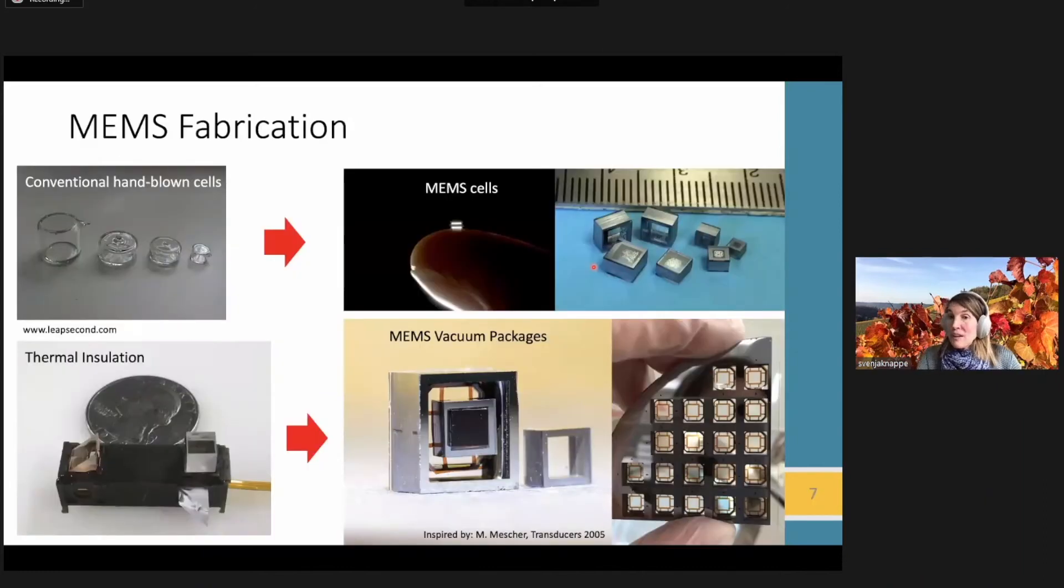In order to make these, again, we want to make lots of these. We want to make them with high uniformity, manufacturable, and so we're heavily relying on MEMS fabrication technologies to do that. Conventionally, these atoms are confined in these glass cells. So that's hard to miniaturize with high uniformity, and it's not really a parallel process. So we've developed silicon and glass technologies on wafers to make these cells here, and we can make them in a variety of shapes and sizes.